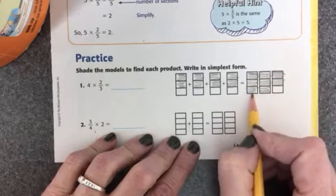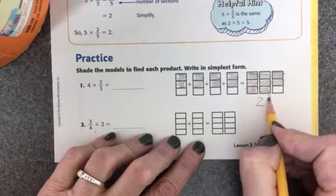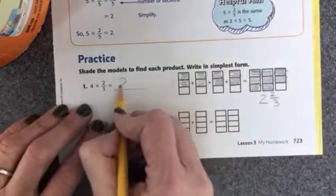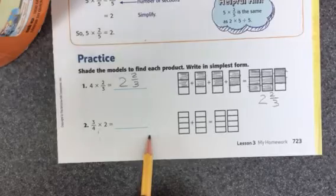So I write down how many wholes I have. One, two. And then I write the fraction. I have two as the numerator and three pieces altogether. So the answer is two and two-thirds. Okay, you'll do the same thing on this one.